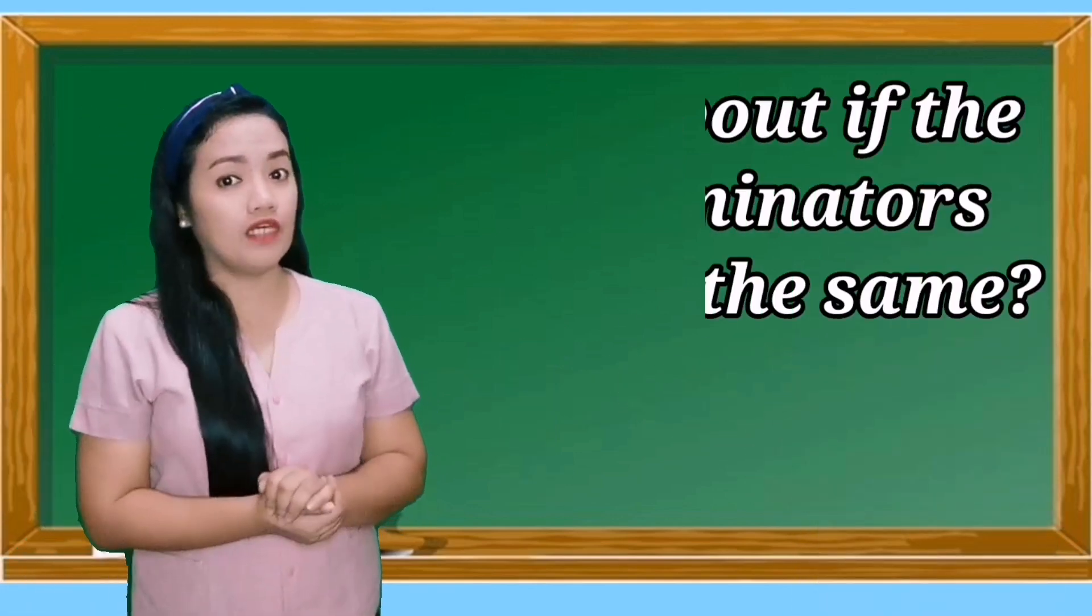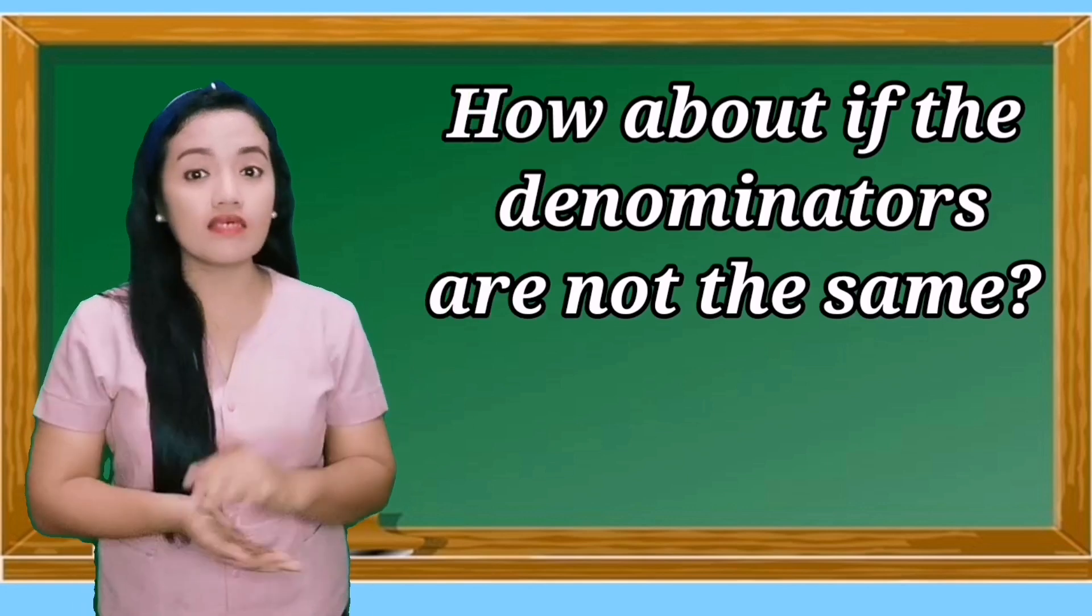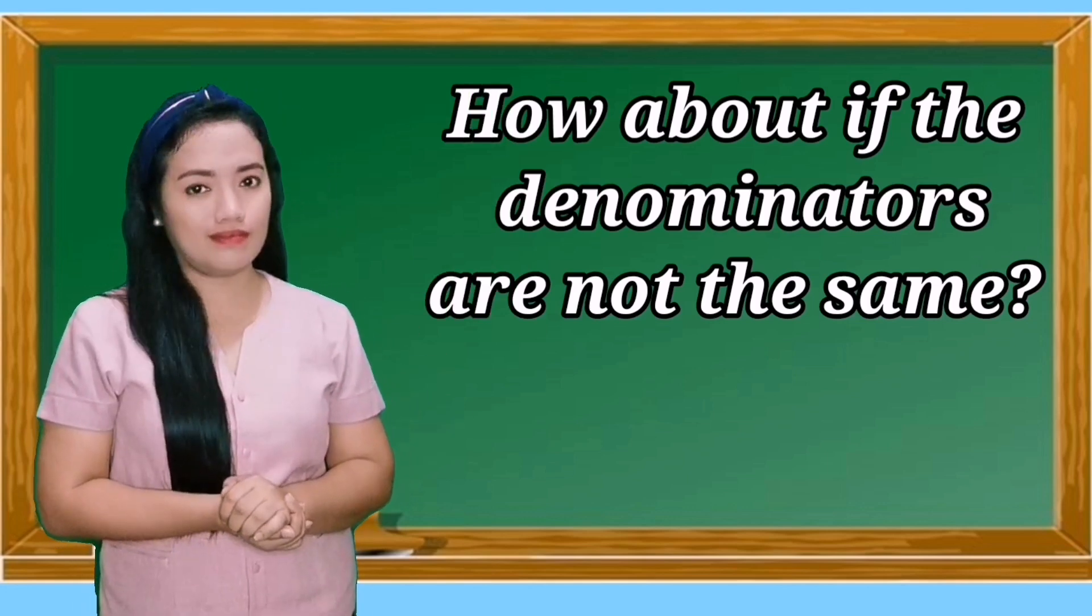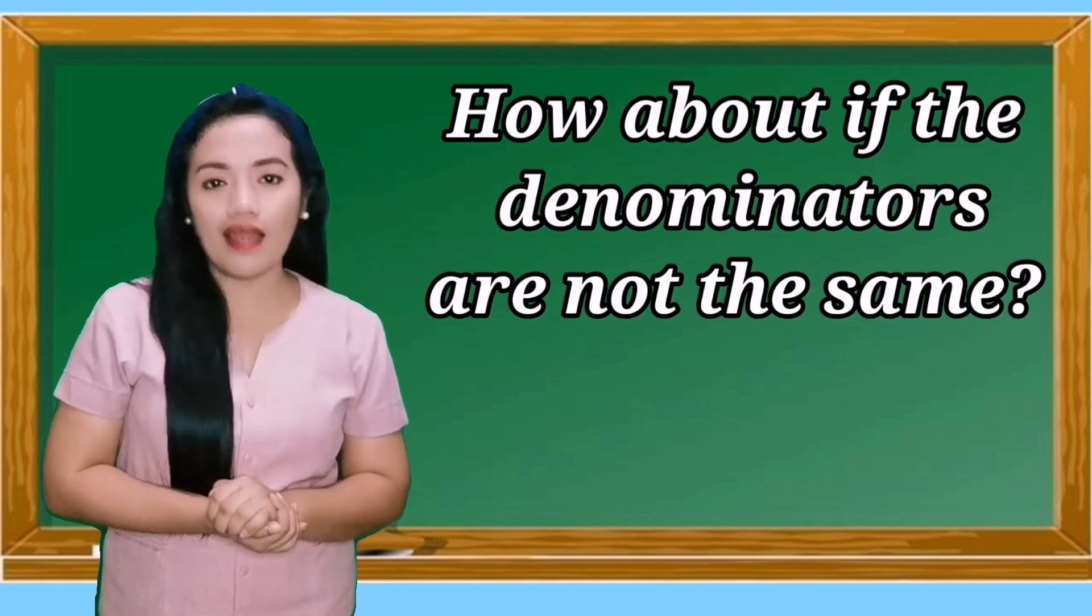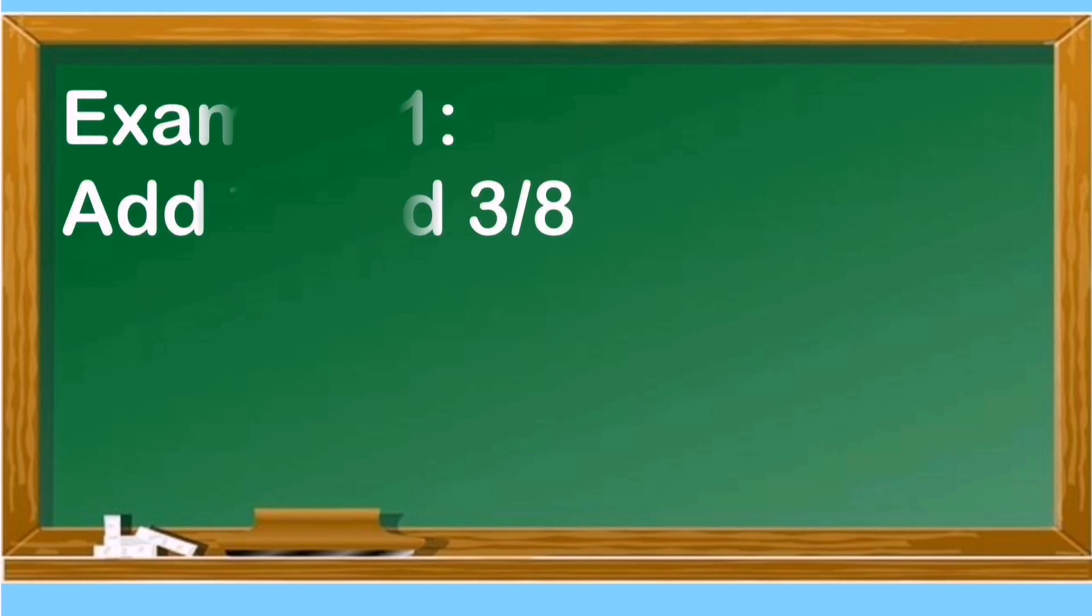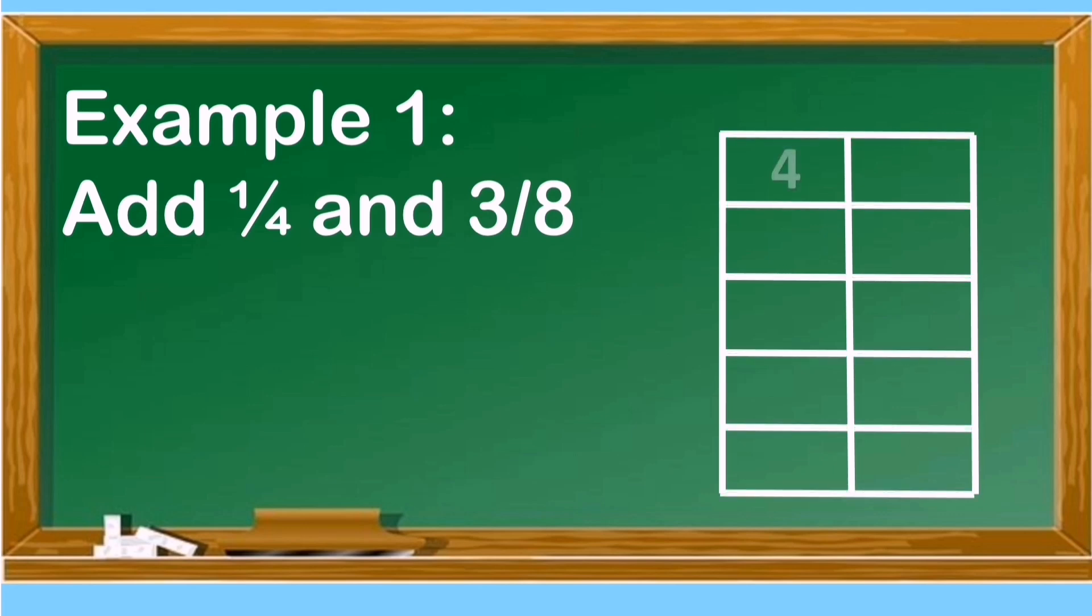How about if the denominators are not the same? What are we going to do? Grade 6, let us take a look on this example. Example number 1, add 1/4 and 3/8. Since our denominators are not the same, we need to find first the least common multiple of the denominators by multiplying the given denominators to the counting numbers.